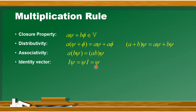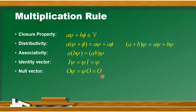And the last property of the multiplication rule is null vector. Null vector zero होगा - zero को जब psi से multiply करें, और psi को zero से multiply करें, तो result zero यानि null vector ही बन जाएगा. तो यहाँ पर zero O को null vector का नाम दिया जाता है. तो यह multiplication rule की properties complete होई हैं.